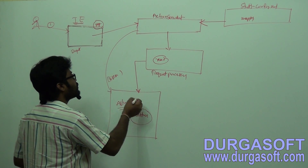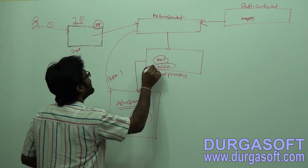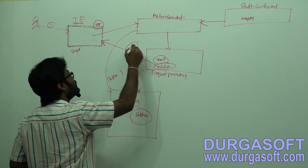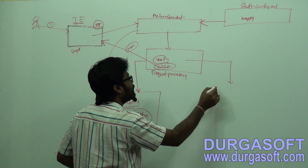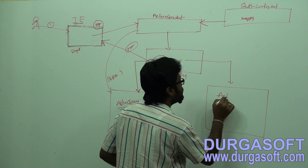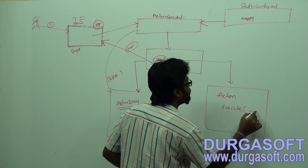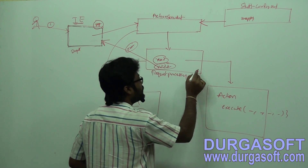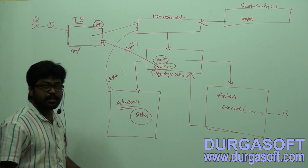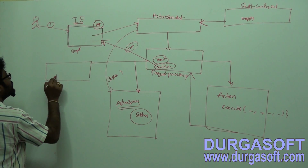After storing data, RequestProcessor will execute the validation stage. If any validation errors are found, it will return errors to the same page. If there is no error, it will finally call the action class execute method. The execute method will run, and finally the execute method needs to return a success or failure page name. Based on that success or failure page name, finally RequestProcessor will return the output.